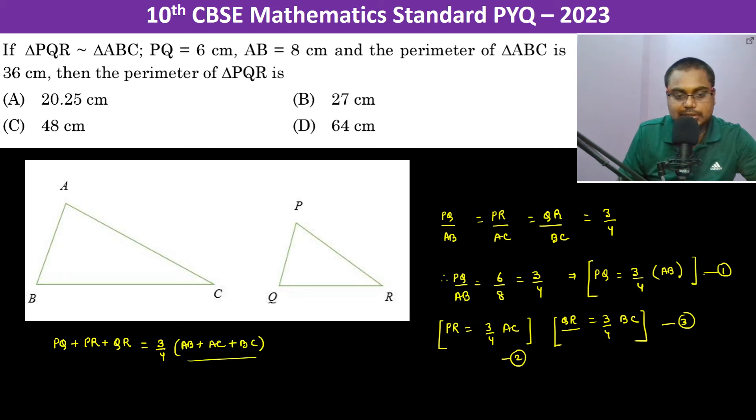If you look carefully, this is the perimeter of triangle ABC. So now it becomes 3 by 4 into ABC's perimeter, which is 36 centimeters. Therefore this becomes 27 centimeters. So therefore B is going to be the answer.